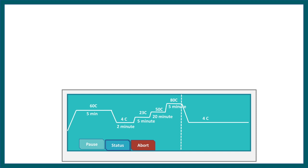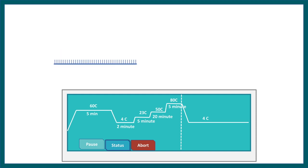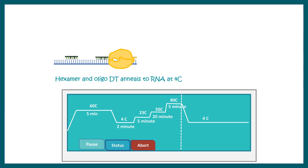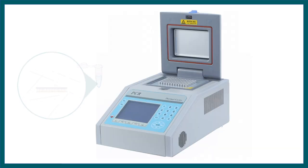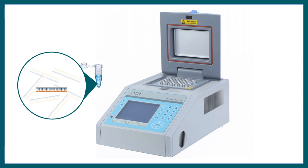Let's understand what happens during the cycles in the thermal cycler. The first step is incubation at 60 degrees Celsius for 5 minutes, where secondary structures of the RNA are resolved and a linearized RNA is formed. Then the temperature is brought to 4 degrees Celsius, where oligo-dT and hexamer primers anneal to the RNA. At 50 degrees Celsius, the reverse transcriptase is recruited and synthesizes the cDNA strand. Finally, it is heat-inactivated at 80 degrees Celsius, and that is how we obtain cDNA from the RT-PCR reaction.